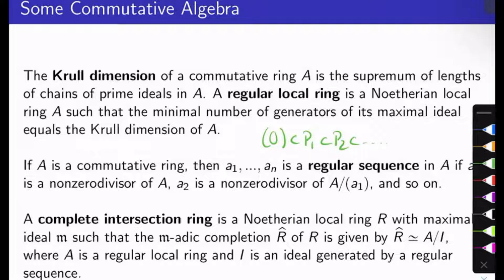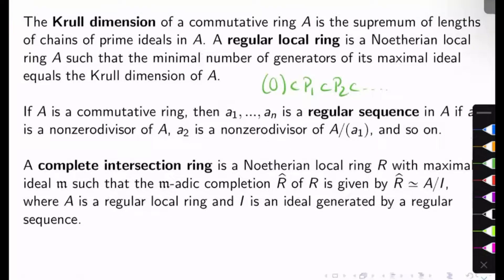A regular local ring is a Noetherian local ring A such that the minimal number of generators of its unique maximal ideal equals the dimension of the ring. Essentially, what's going on here is these have some nice geometric smoothness type properties. We like regular local rings.